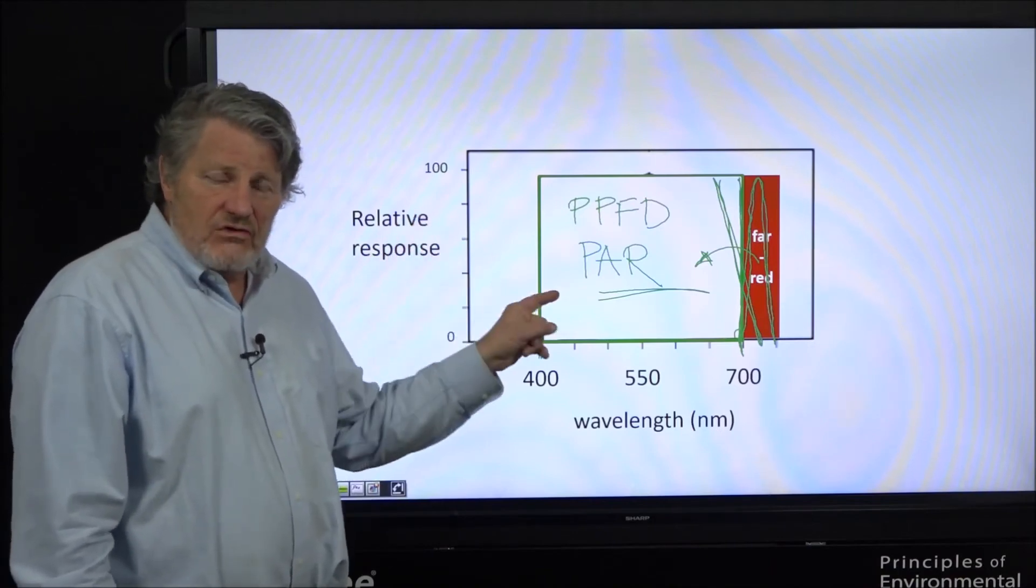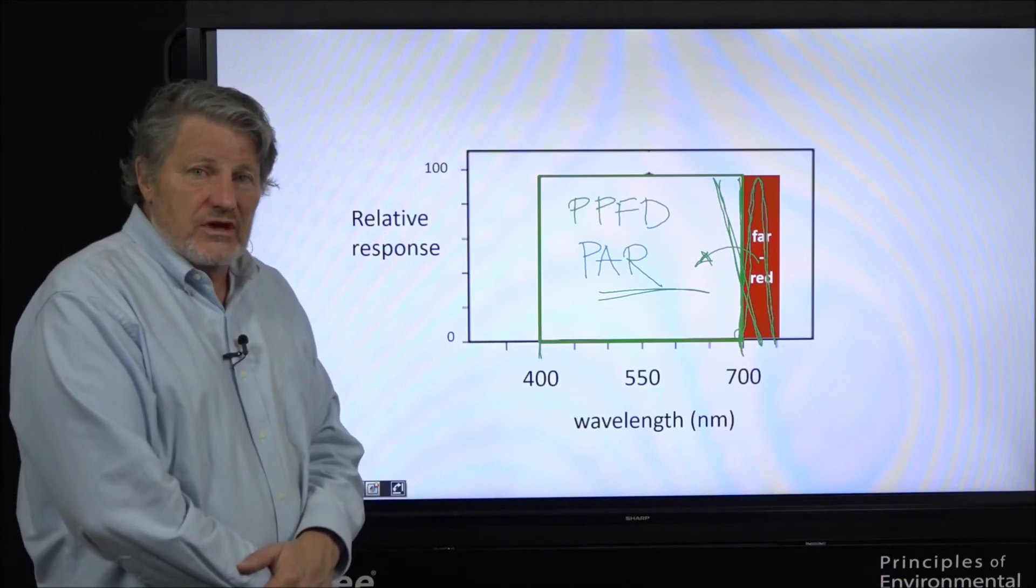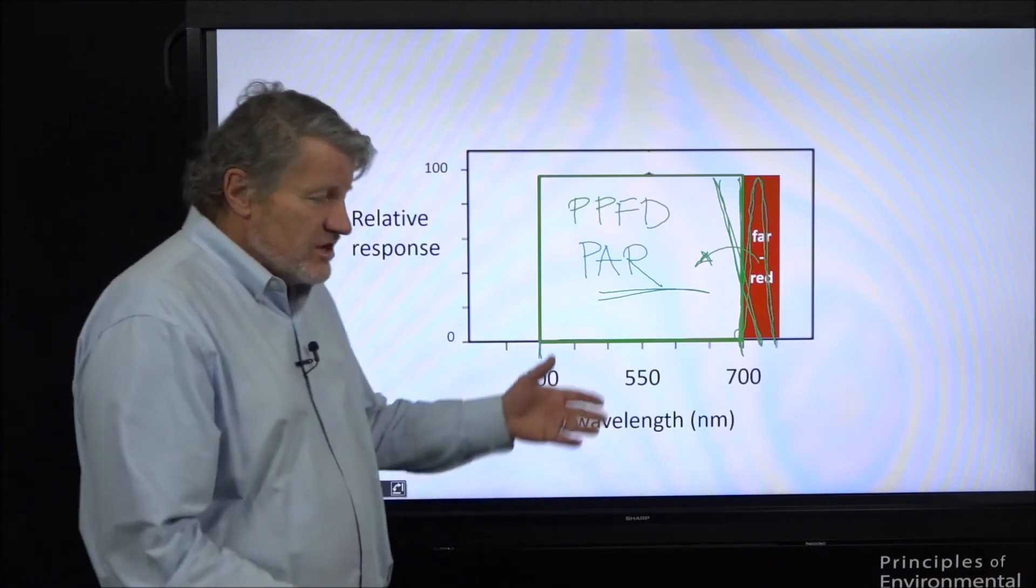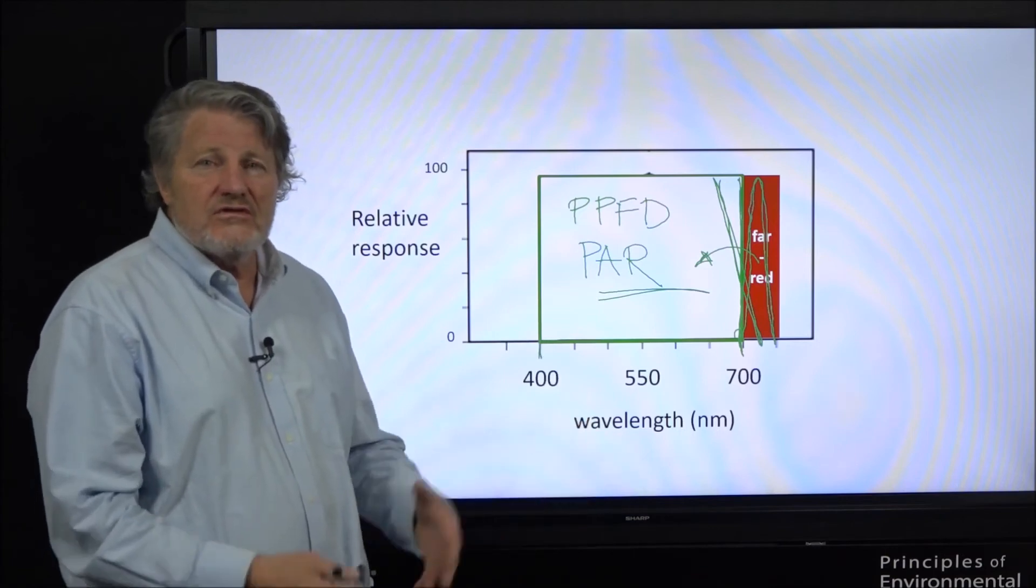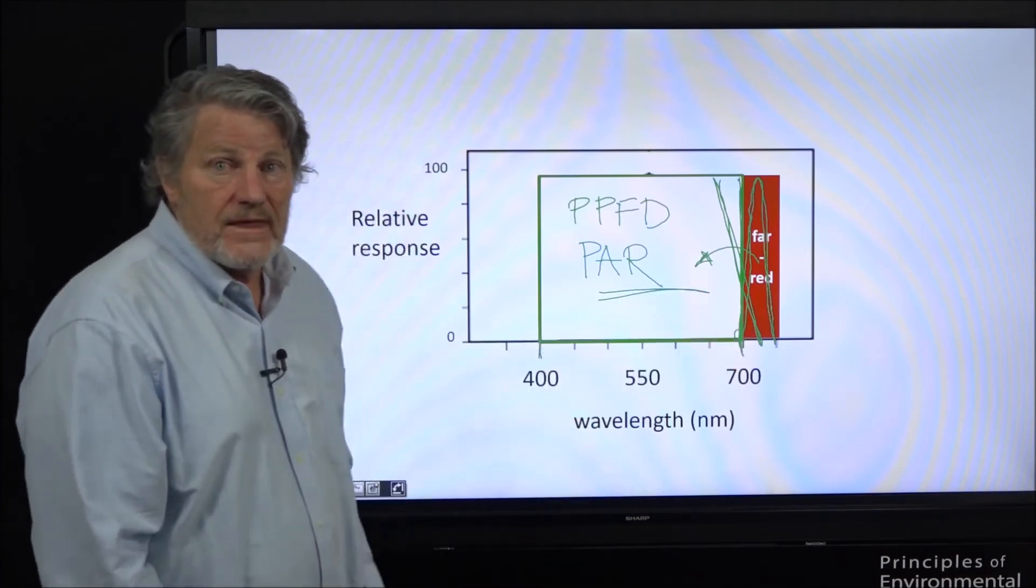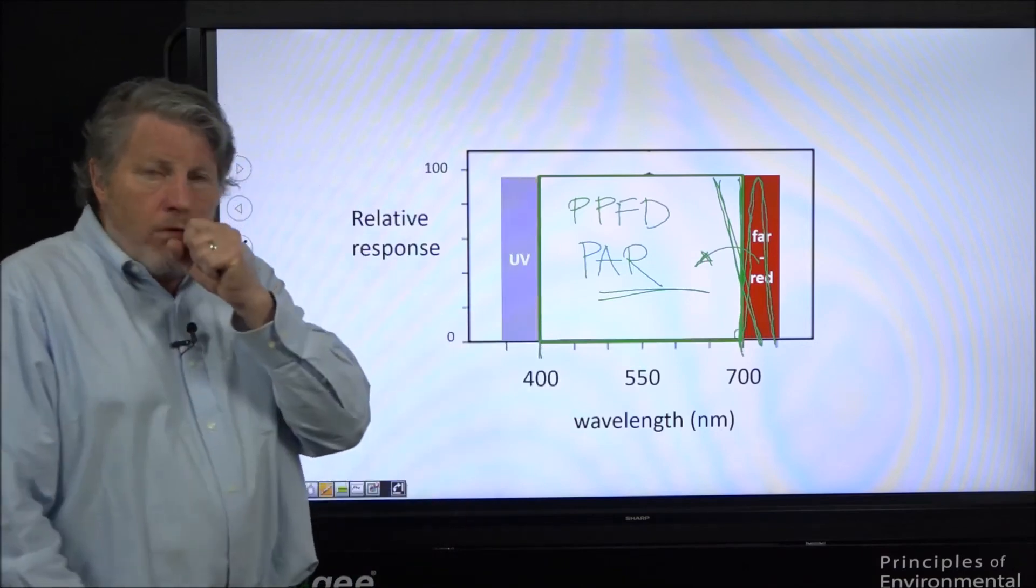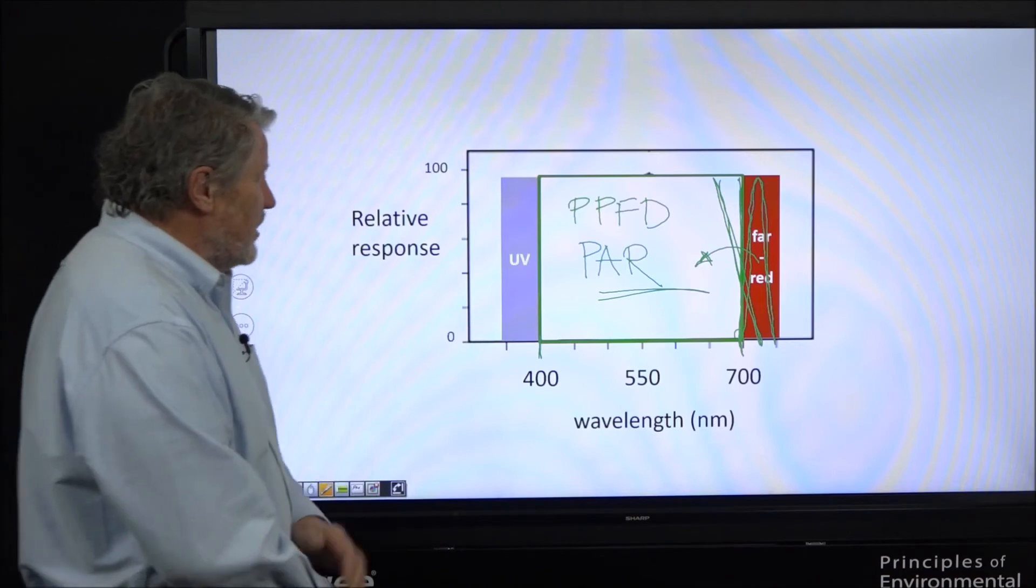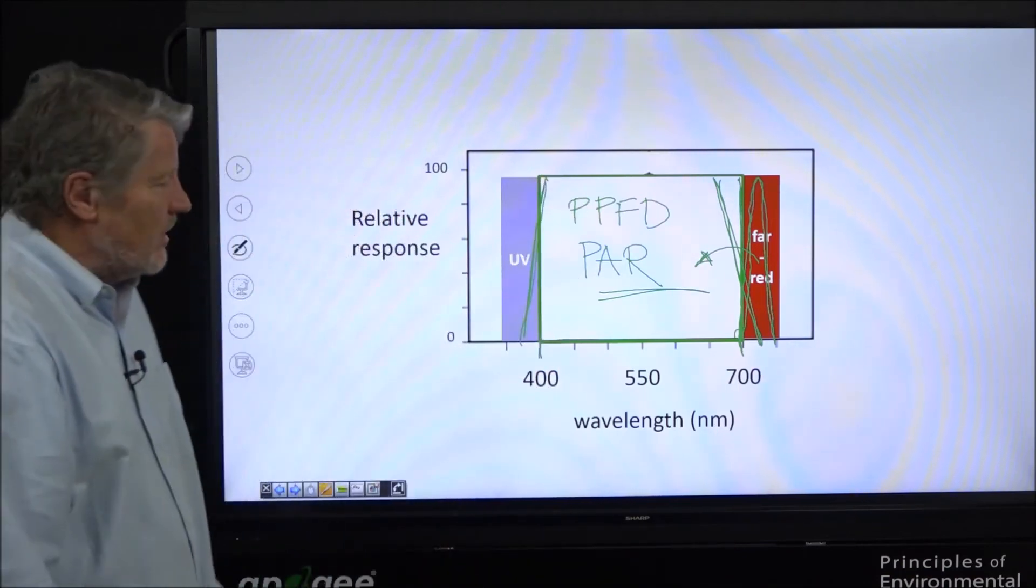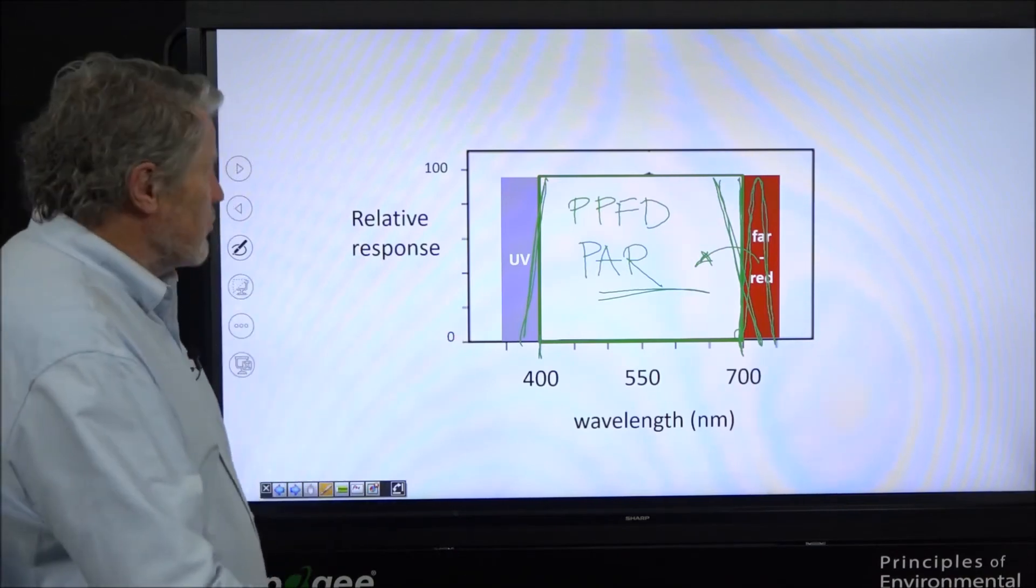This was discovered in the 1950s by Emerson and it's called the Emerson enhancement effect, but it sat there for half a century and we didn't study it until now that we have far red LEDs. We're taking a close look at the value of far red. On the other end of the spectrum, UV photons - is this a sharp cutoff? How well are these UV photons used? The next two slides show some of our work on UV photons.